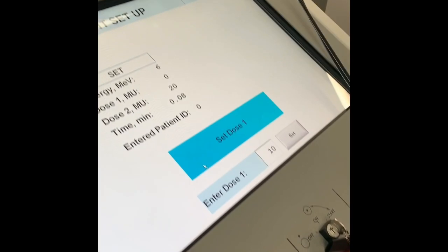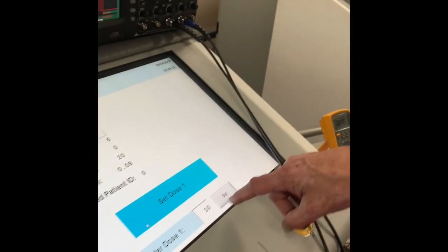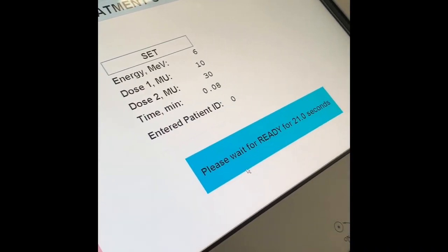Alright, so we're setting up to do a flash treatment. We're selecting 6 MeV. We're going to do just 10 pulses for that, so we'll set that in and confirm everything.